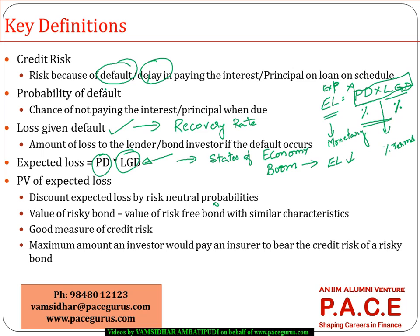Compared to the expected loss, the present value of the expected loss is what is more important as part of the credit risk analysis process. When we say present value, it involves discounting all the future expected losses to the present value. So at the end of one year, what is the expected loss? At the end of two years? At the end of five years? You bring all of them to the present value, and that is equal to the present value of the expected loss.